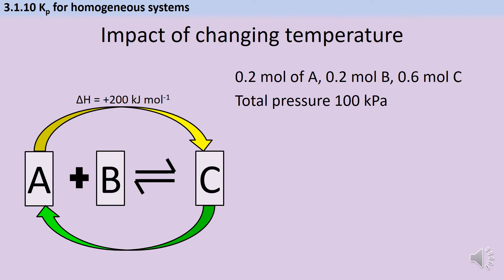Now, if we write an expression for the value of Kp, that's going to be the partial pressure of C divided by the product of the partial pressures of A and B. And if we worked out a value for that, it would be 0.15 kilopascals to the minus 1. But the question is, as the temperature changes, does this value change?